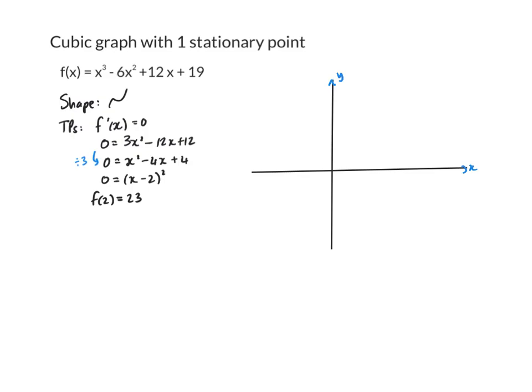So if I draw a quick rough sketch, my graph will be increasing and I know my one stationary point is at x is 2 and y is 23. The graph is increasing, then stationary, then increasing after that. Before that point, my graph is concave down, and after that, it's concave up.